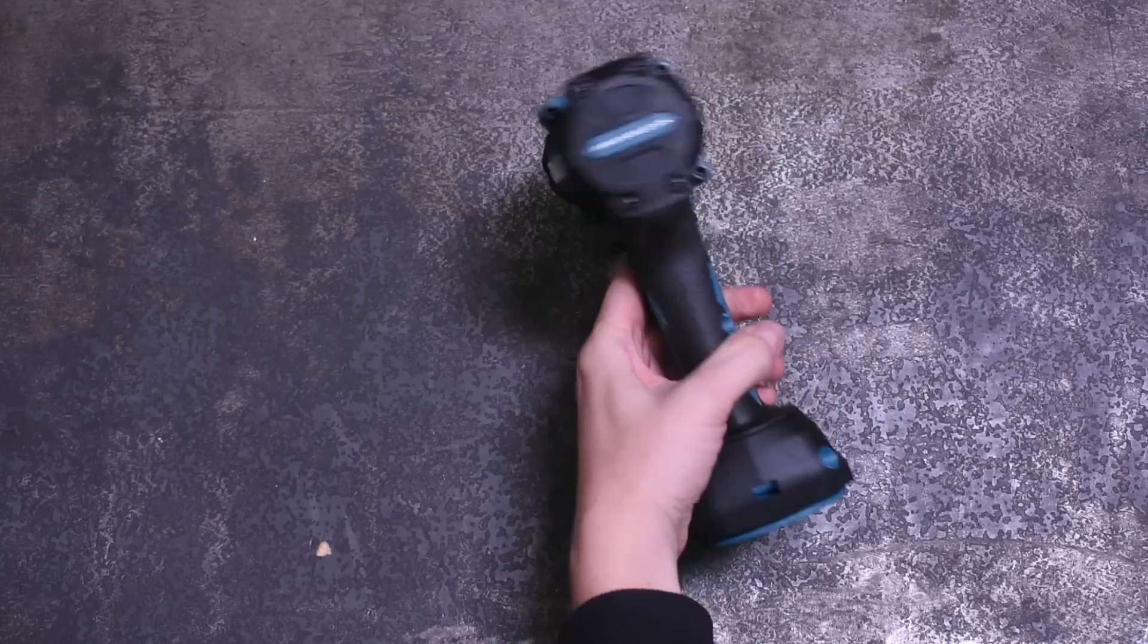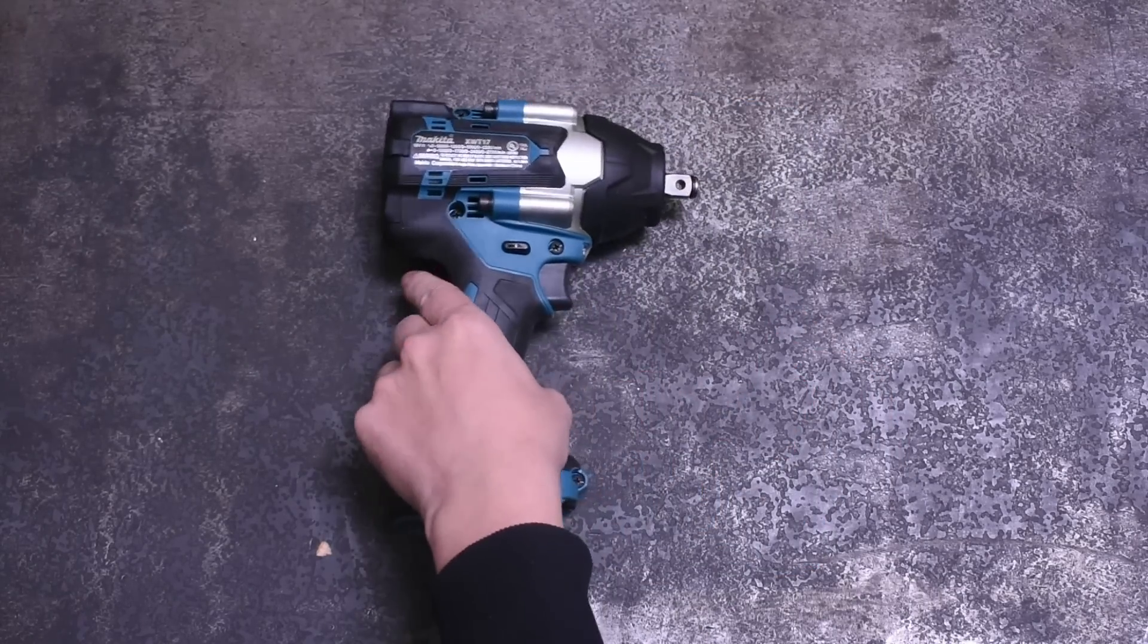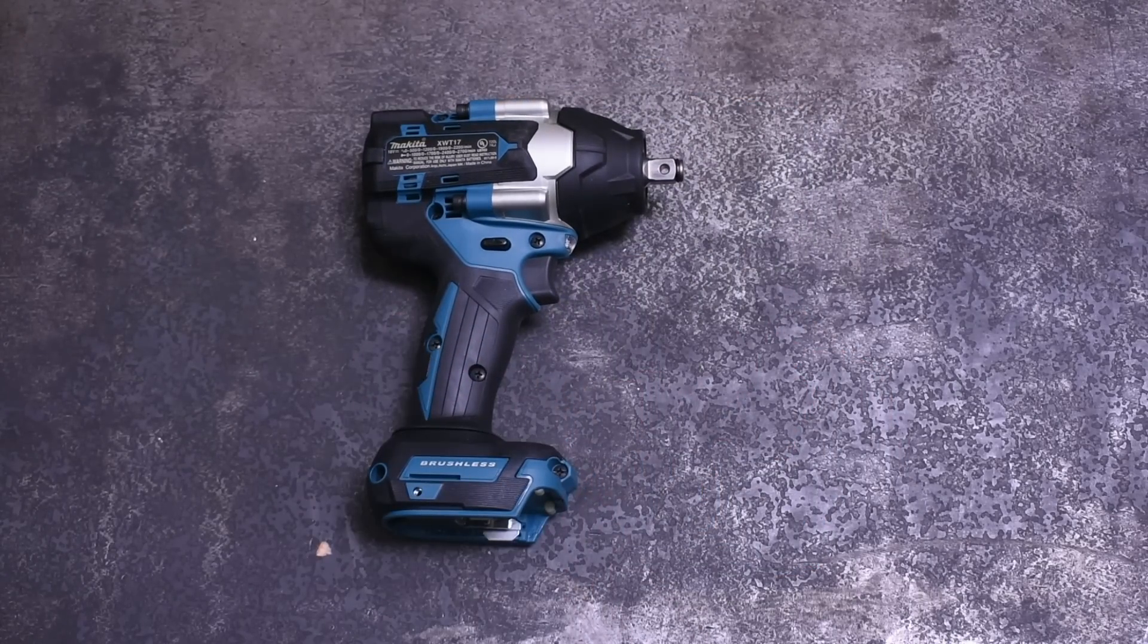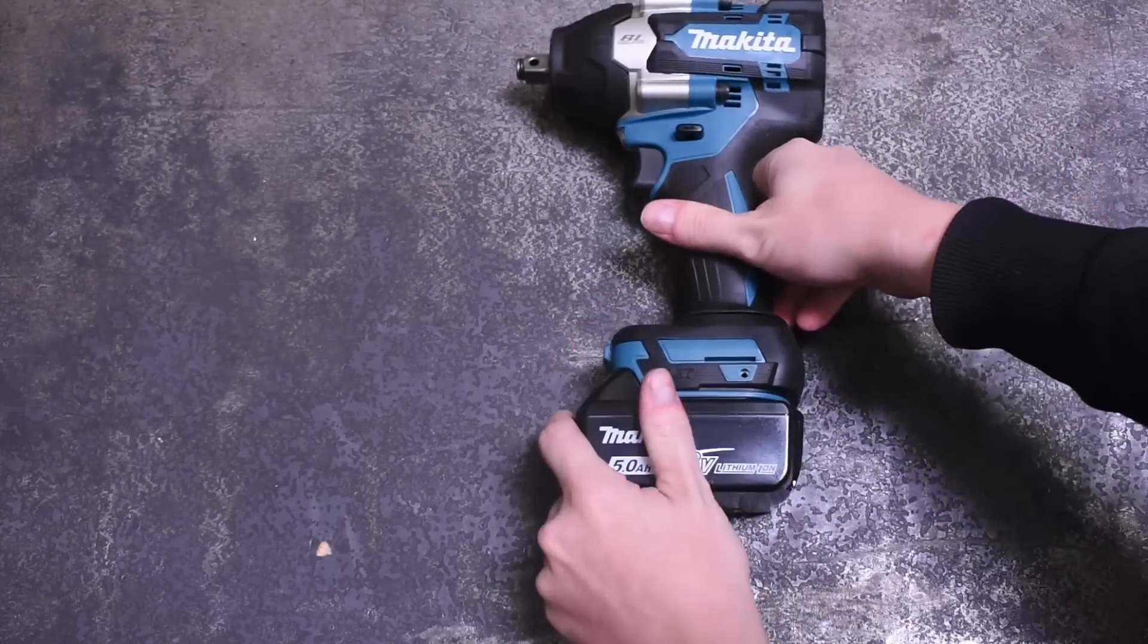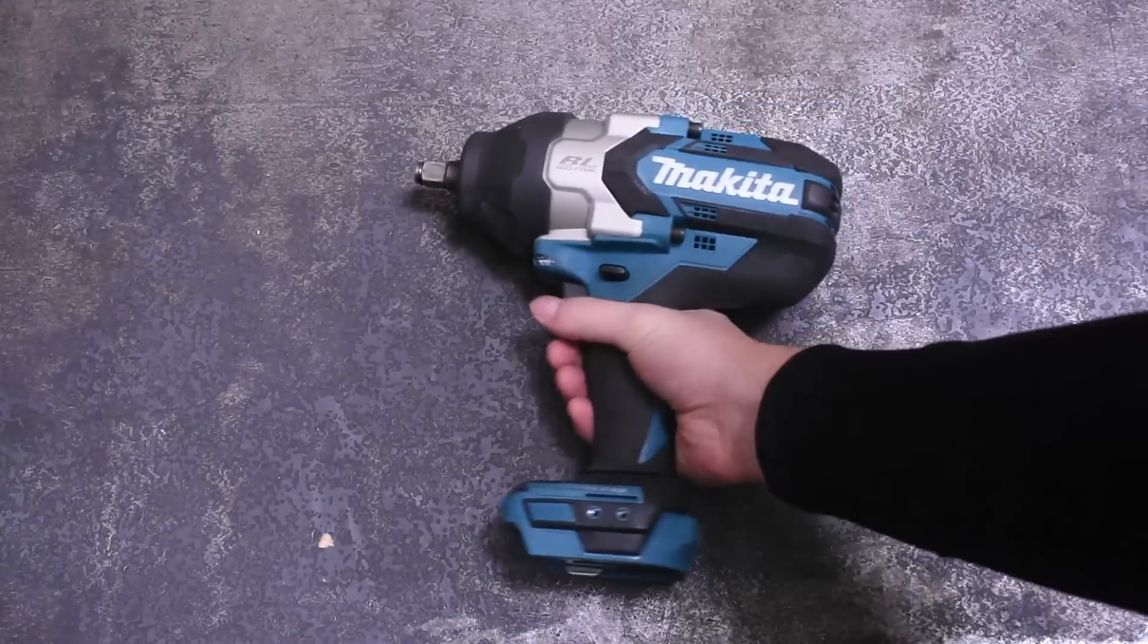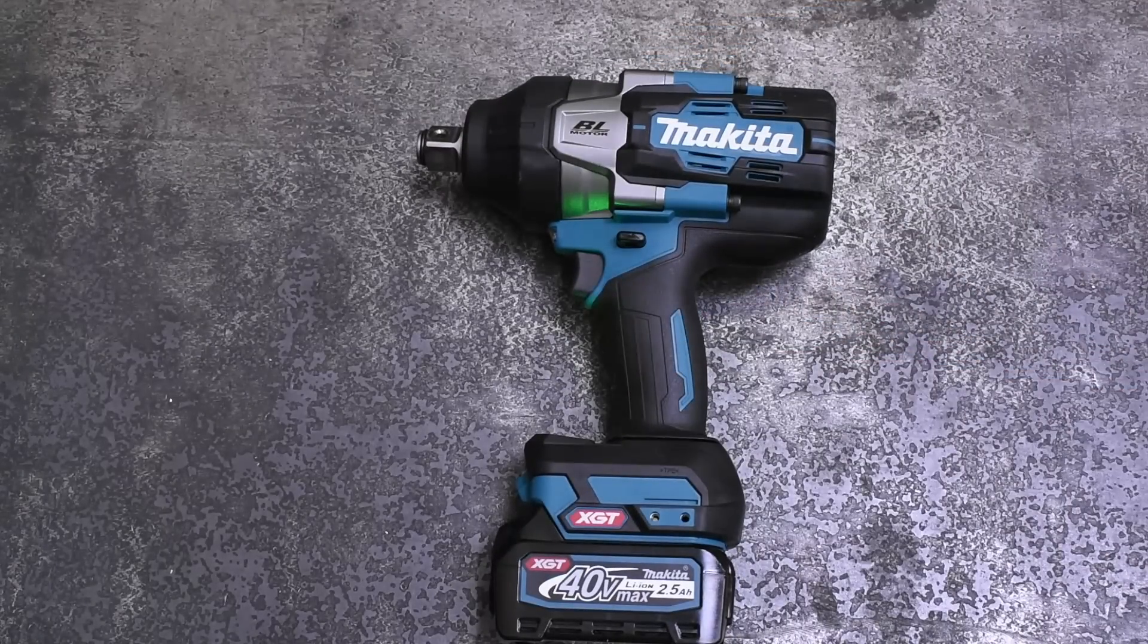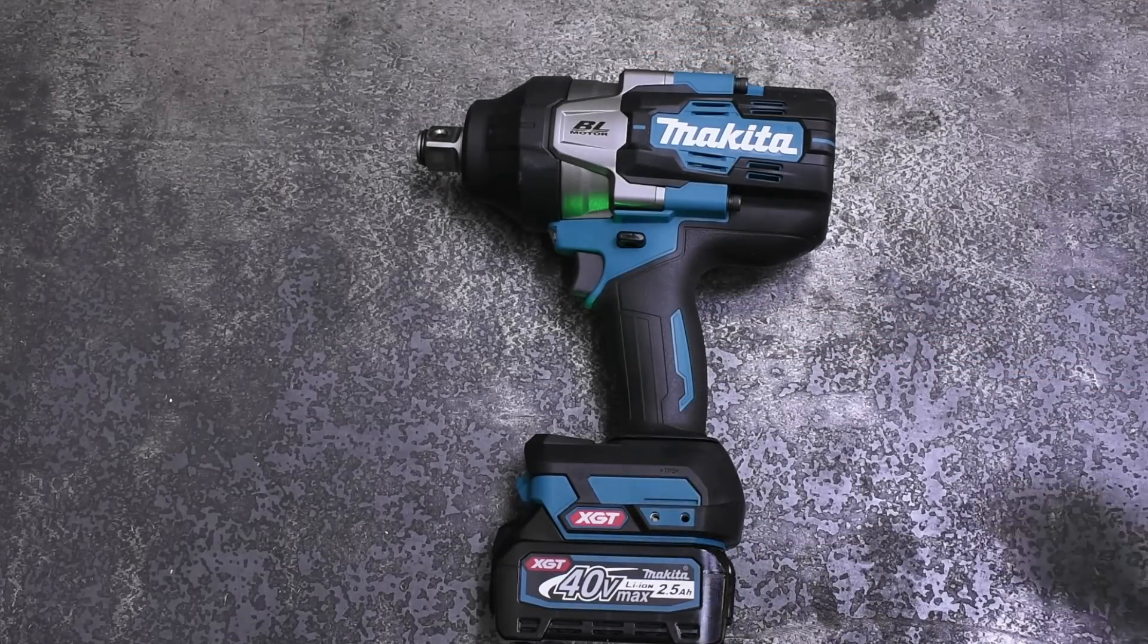But if 430 foot-pounds is not enough to tackle the 738 of this guy, we have tested the newest Makita mid-torque XWT18Z, also rated for about 1,000 newton meters or 740 foot-pounds, as well as the high torque at 1,180 and the XGT three-quarter inch at 1,330 if we need to call them in for backup.